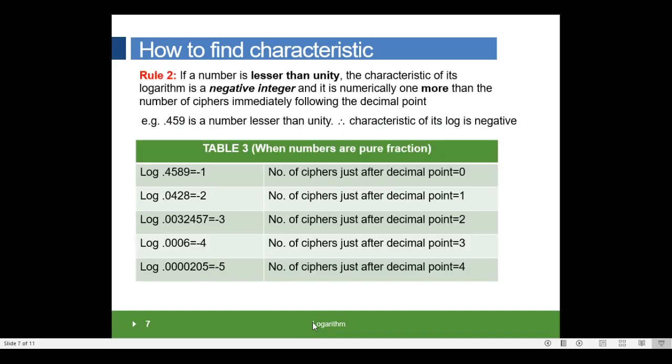Rule 2: if a number is lesser than unity, the characteristic of its logarithm is a negative integer, and it is numerically 1 more than the number of zeros immediately following the decimal point. For example, 0.459 is a number lesser than unity. Therefore, the characteristic of its log is negative.